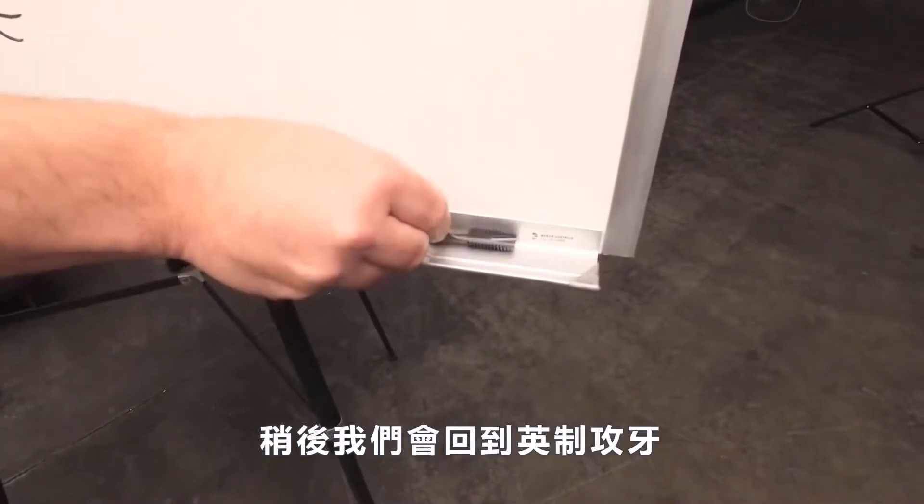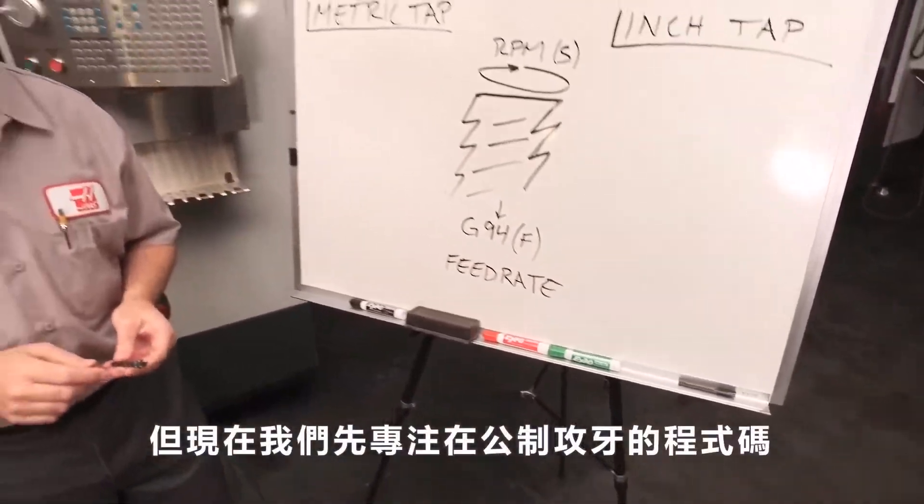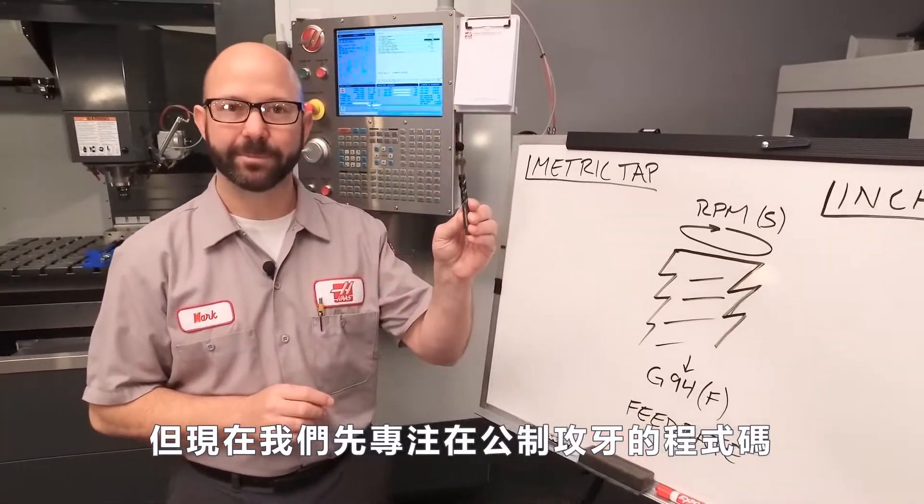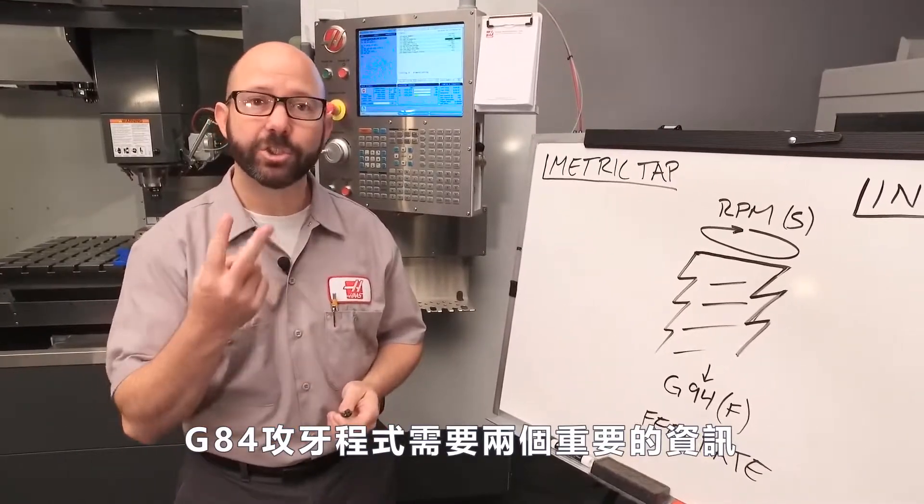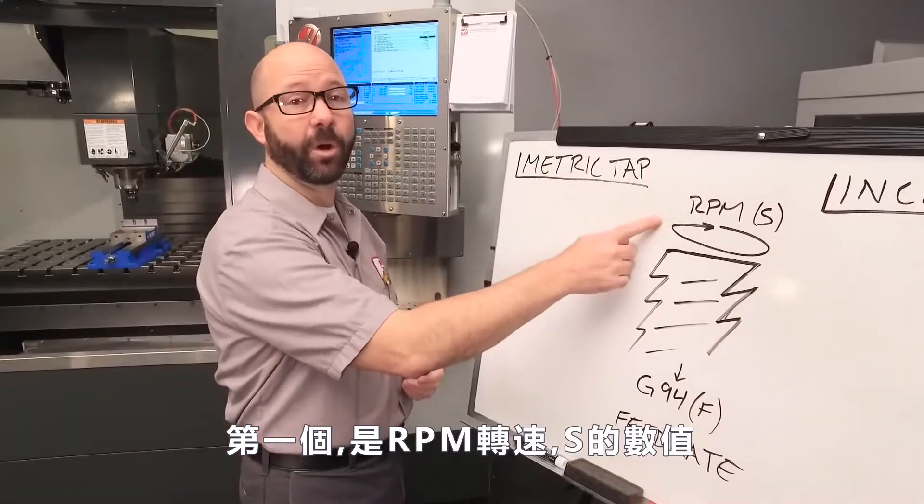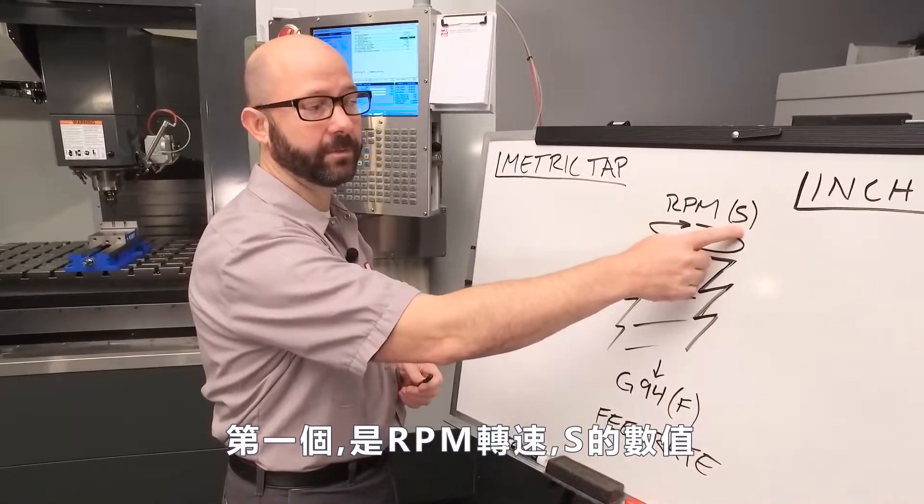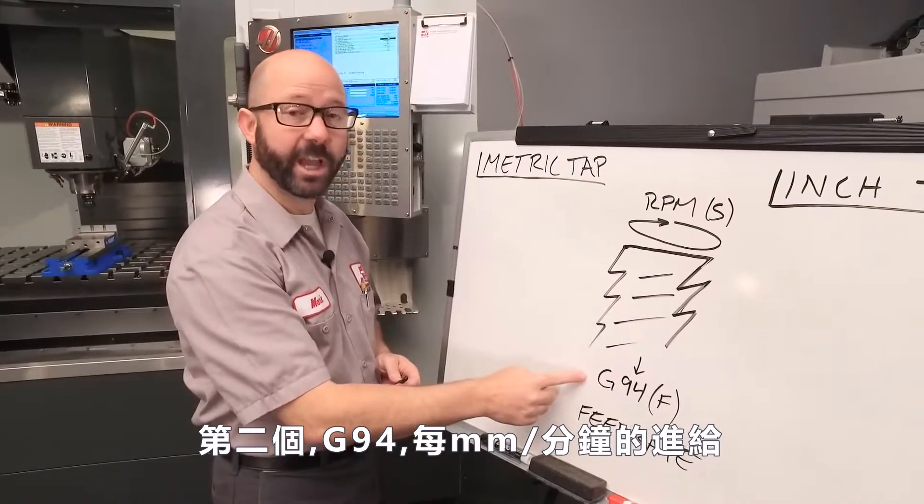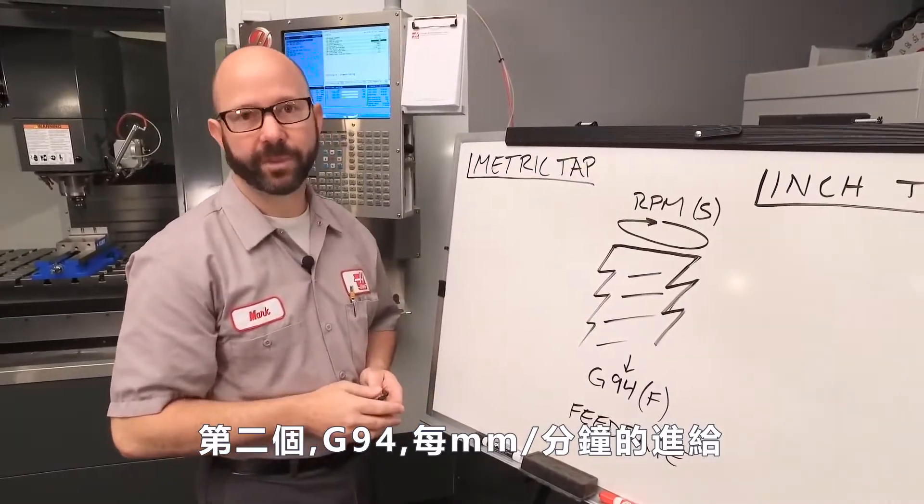We'll come back to this inch tap in a minute. Right now we're going to focus on programming our metric tap. Our G84 tapping cycle needs two critical pieces of information. First, it needs to know our RPM, our S value. And second, we need to know our G94 millimeter per minute feed rate.